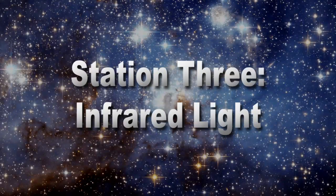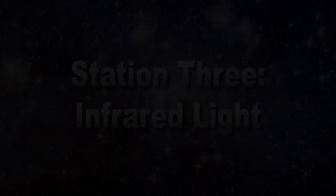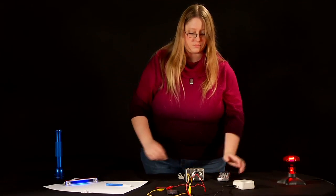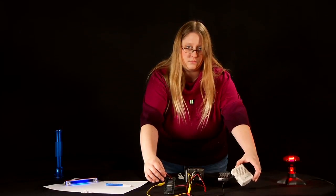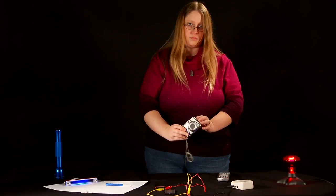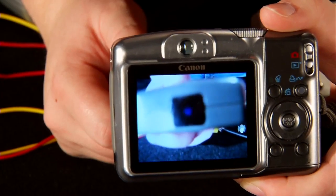The type of light in Station 3 is infrared. The source in this case is a remote control. There are two possible detectors for this station, either a simple detection circuit, which you can see being built in another one of our videos, or a camera phone or digital camera without IR blocking features.